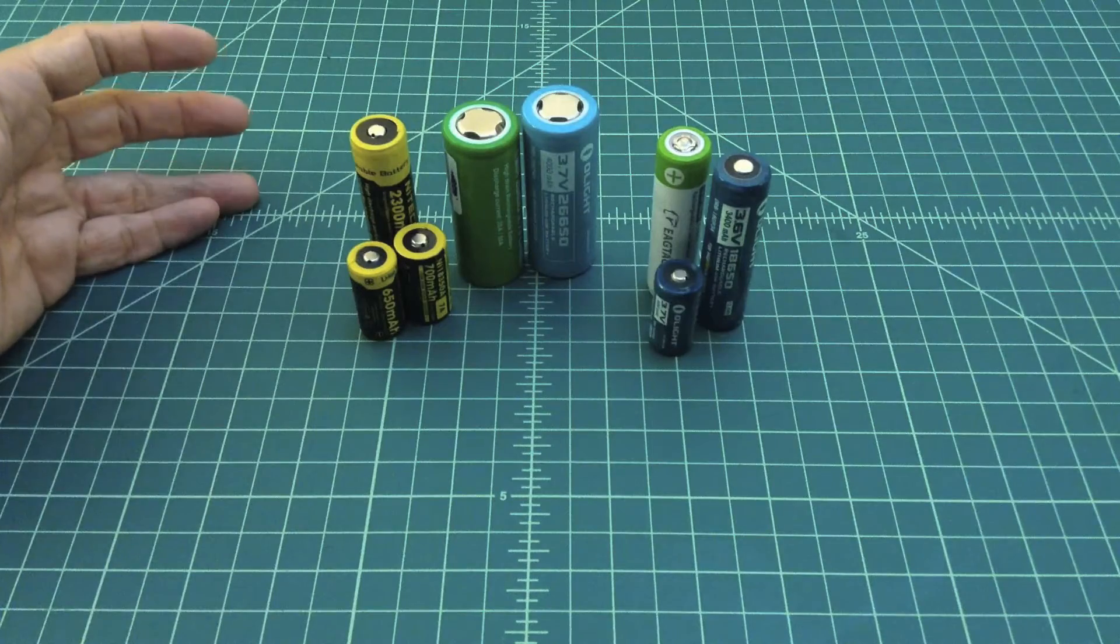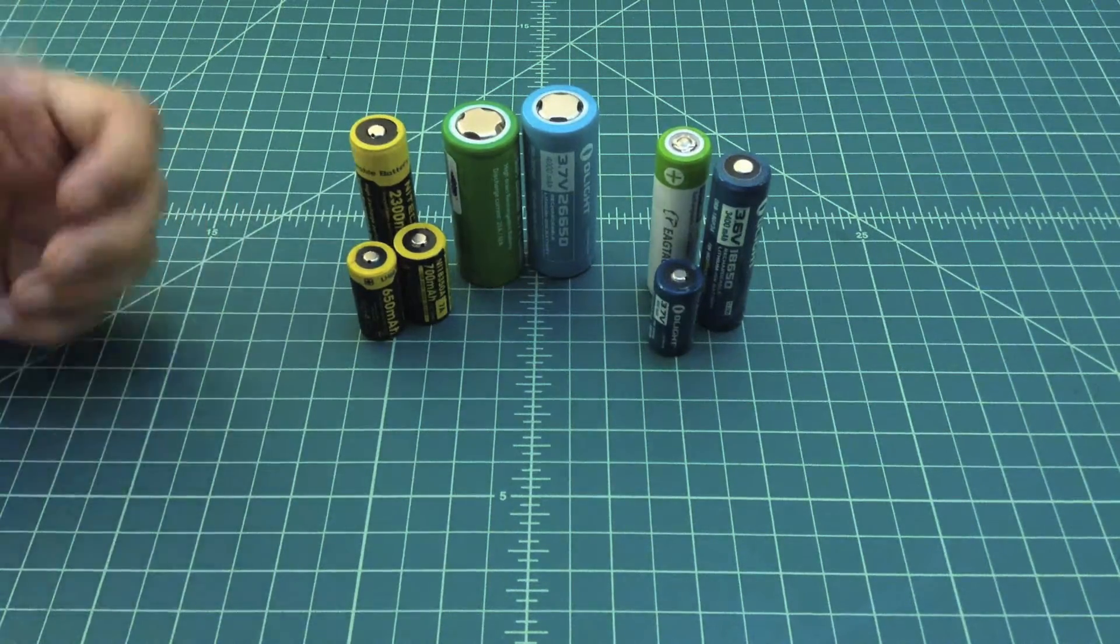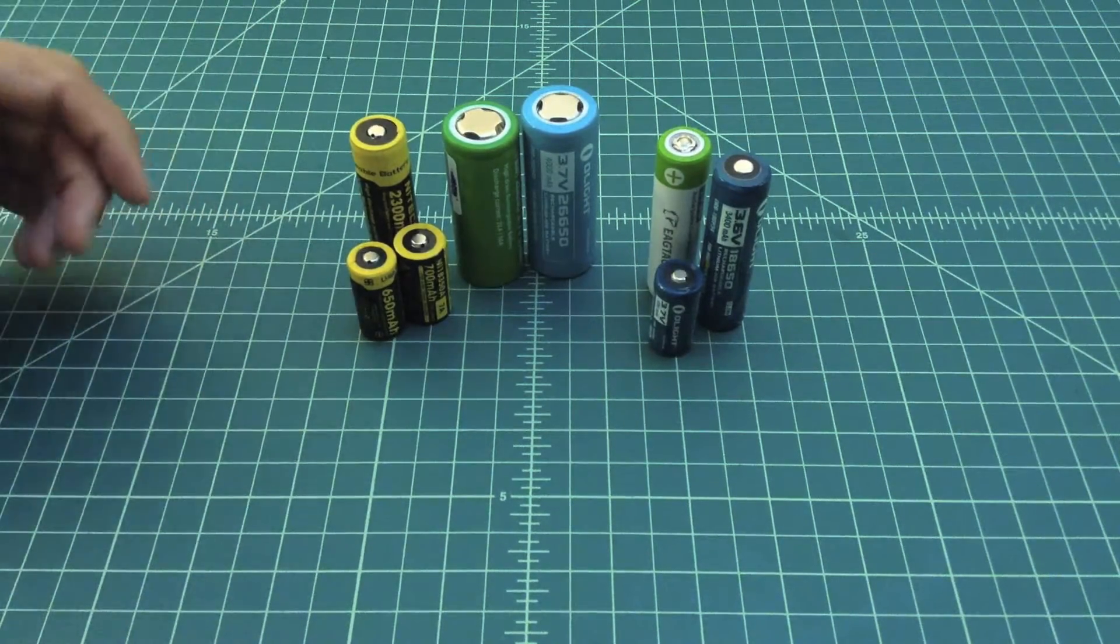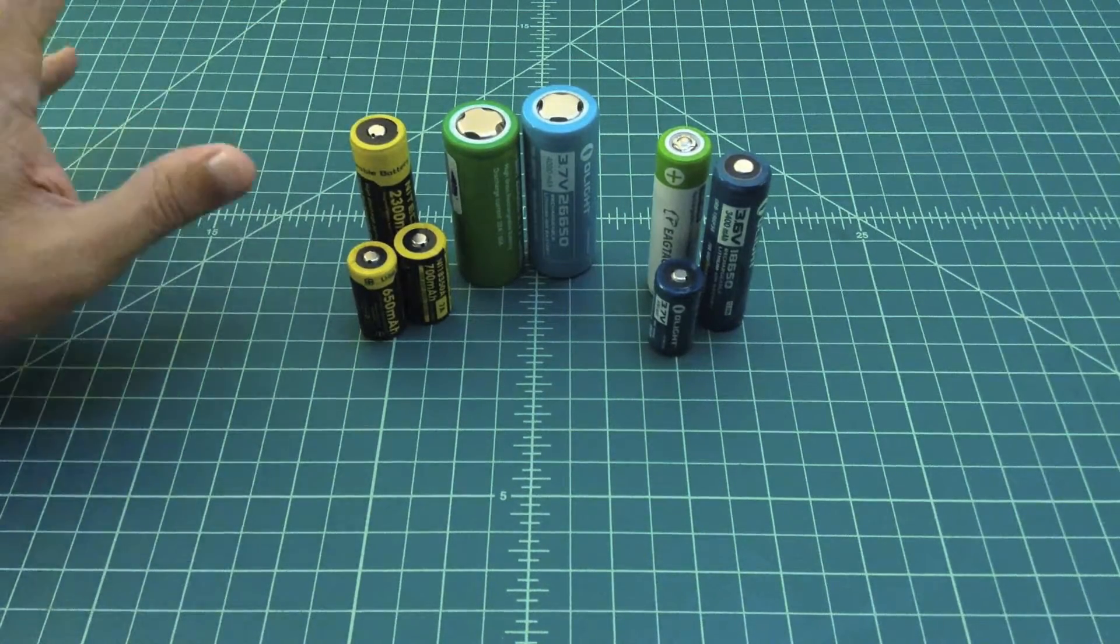But when you use things like a camera that has a flashbulb or use things like a vape that need to be activated when you push a button to create heat to take vape juice and turn it into smoke or clouds or whatever the hell it's called.